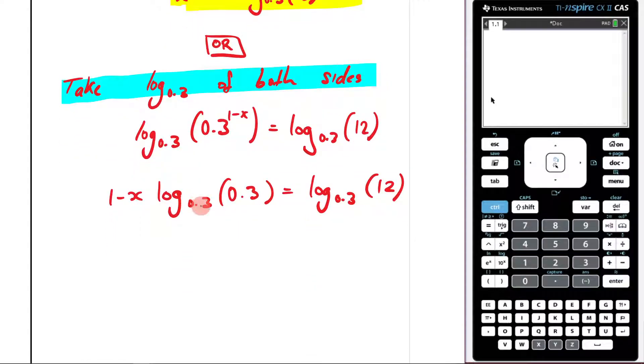Now, log base 0.3 of 0.3 - remember when your argument and the base are the same, it just becomes 1. So this becomes 1 minus x, if I was to write it out, it's 1 minus x times 1, which equals log base 0.3 of 12.